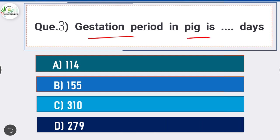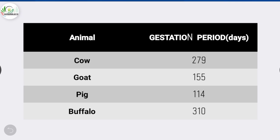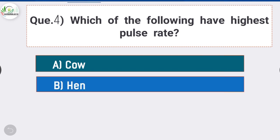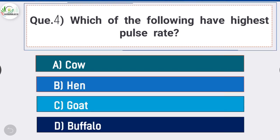Question number three: the gestation period in pig is how many days? The answer is option A - 114 days. The gestation period in pig is 114 days. The gestation period in cow is 279 days. The gestation period in goat is 155 days, and the gestation period in buffalo is 310 days.